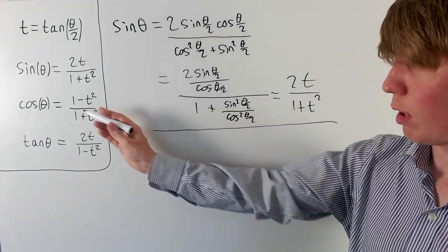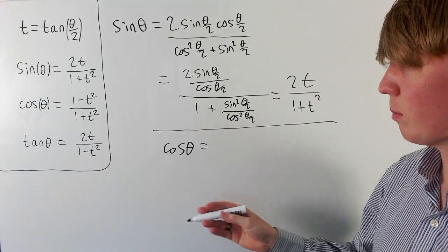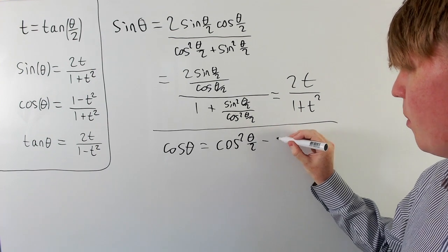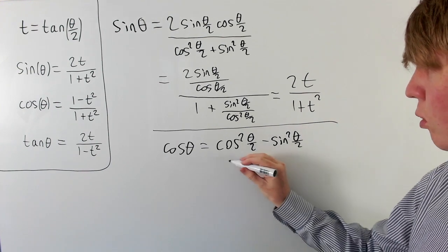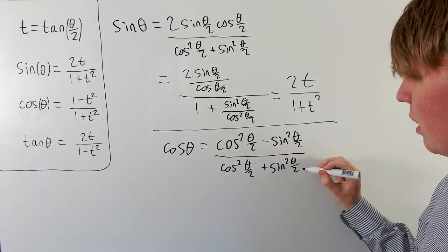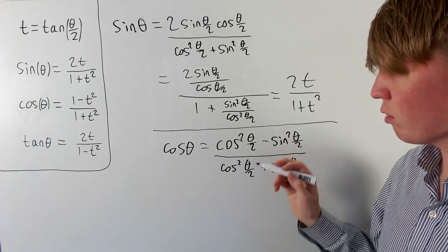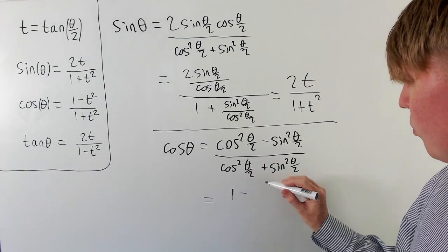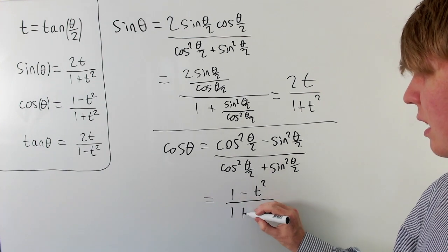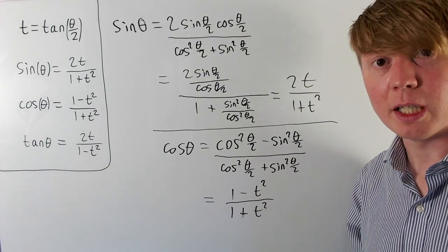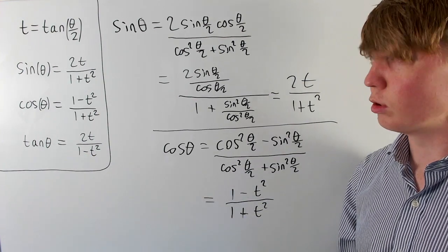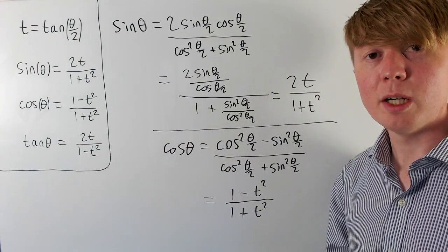We can apply the same argument to derive the formula for cos. So cos(θ) = cos(2 × θ/2), and using the double angle formula we write this as cos²(θ/2) − sin²(θ/2). Dividing by cos²(θ/2) + sin²(θ/2), then dividing numerator and denominator by cos²(θ/2), we get cos(θ) = (1 − t²)/(1 + t²). For tan(θ), you can use the double angle formula for tan, or divide the sine formula by the cosine formula.